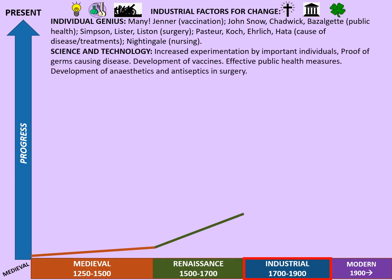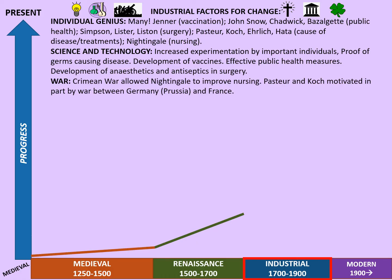Science and technology saw increased experimentation by important individuals, proof of germs causing disease, development of vaccines starting with smallpox and extending to others including rabies, effective public health measures by the end of the 19th century, and the development of anaesthetics and antiseptics in surgery, making it more advanced and a great deal safer. War also has a role to play: the Crimean War allowed Nightingale to improve nursing, and Pasteur and Koch were motivated in part by the war between Prussia and France at the end of the 19th century.